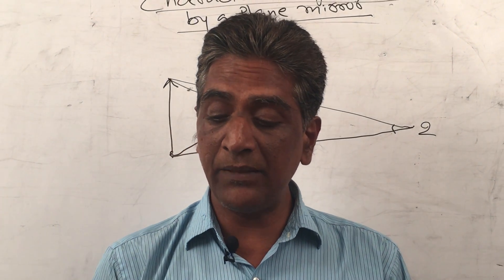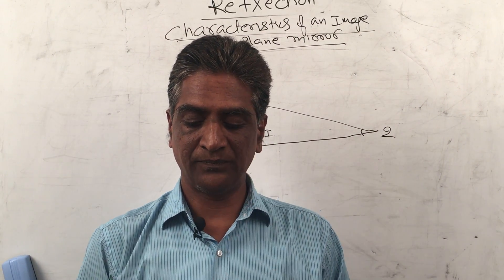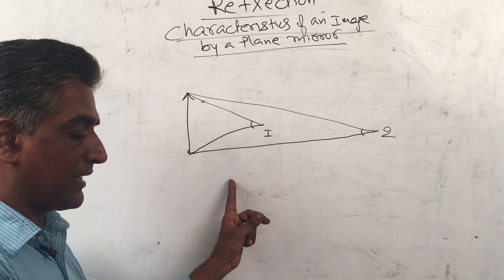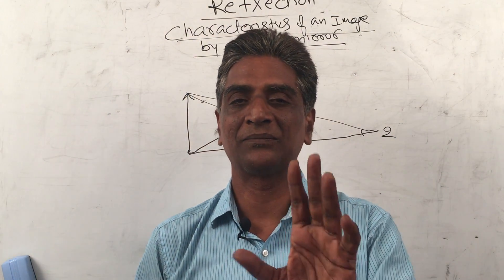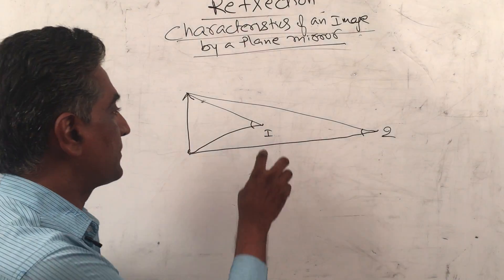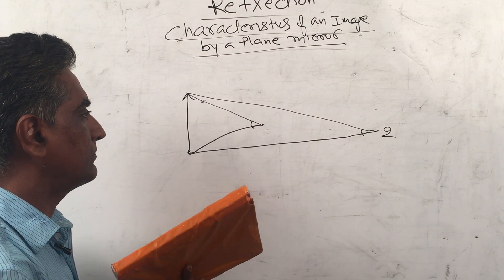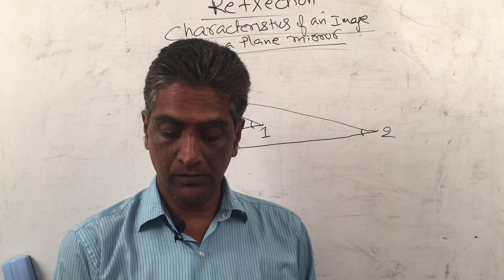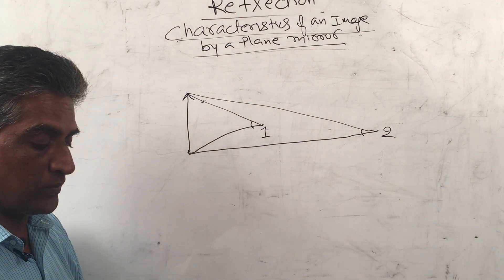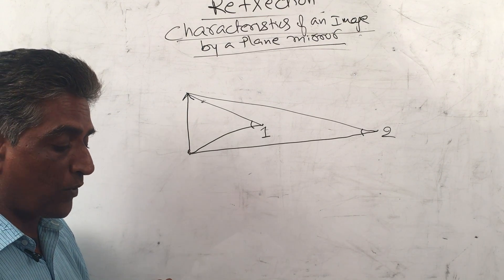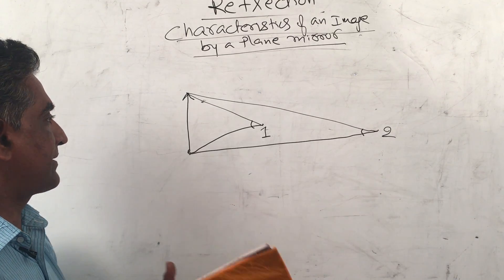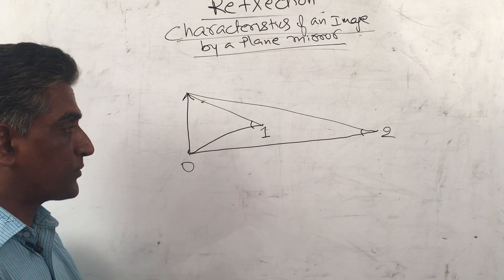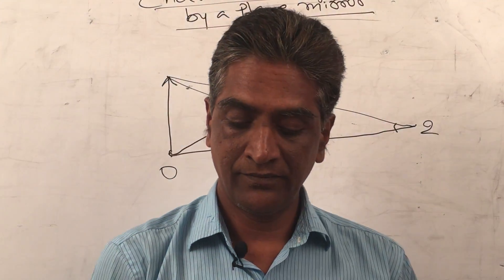Why does the size of the image seem to decrease when we move the object towards the eye? To understand this, see Figure 10, which shows how our eyes judge the size of an object. Observers 1 and 2 are looking at an object which is at a point O. It looks smaller to observer 2 than to observer 1.